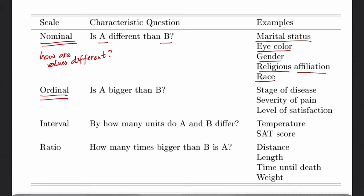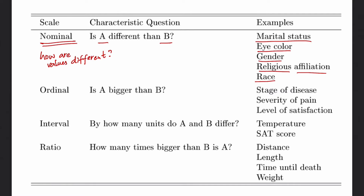The ordinal scale involves differentiating by relative size — which value is bigger than the other. For example, disease stage ranges from stage one (minor) to stage four (metastasis), where each stage is worse than the previous. Severity of pain on a scale of 1–10 shows relative differences, and level of satisfaction from dissatisfied to satisfied also represents an ordinal scale. Ordinal scales expand the nominal scale by classifying individuals in a relative order, such as low, medium, and high socioeconomic status.